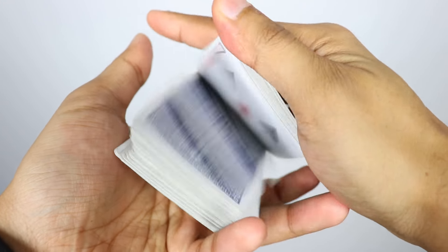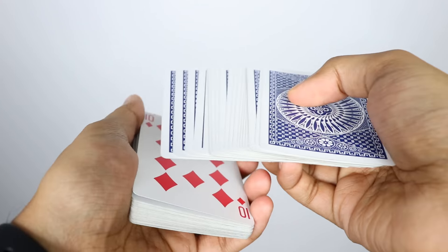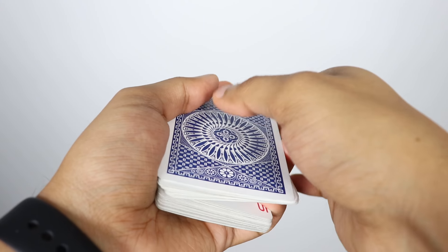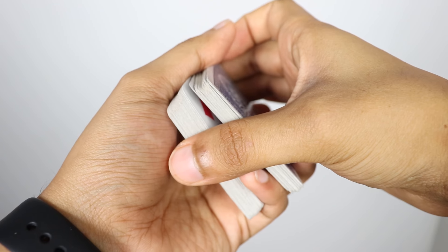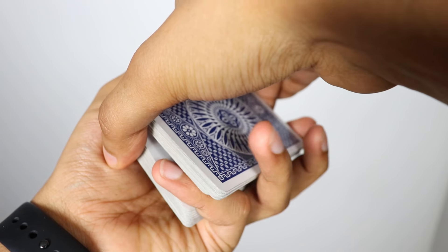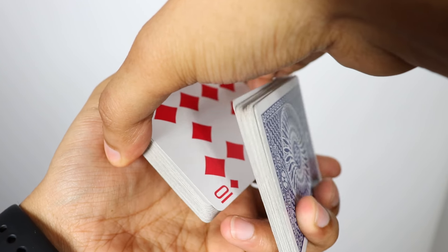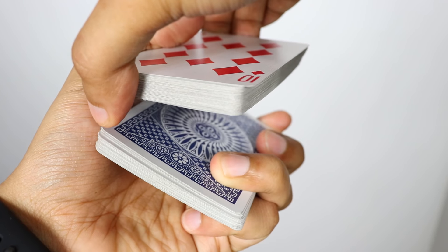So one more time in case I missed something. We're controlling the card to the top. So let's just say 10 of diamonds. We close this up, get the break, get into the right position, get the right grip. Pull these cards out, pull this up, roll these back.